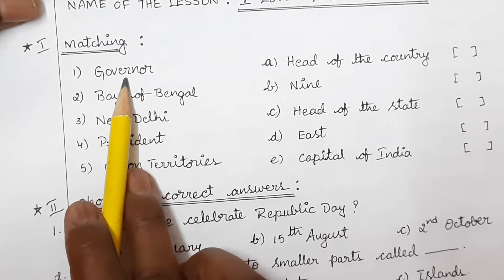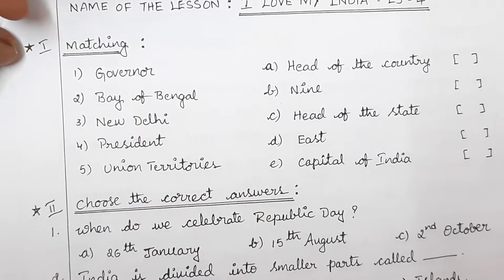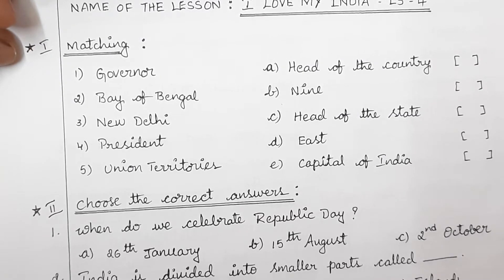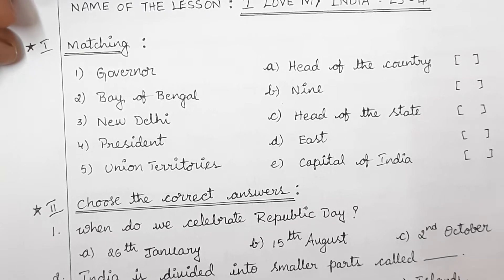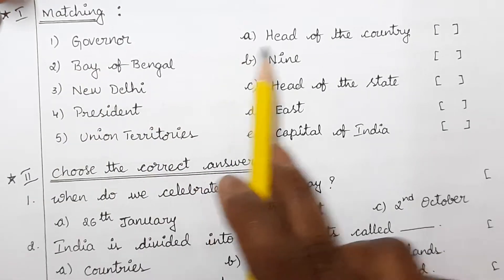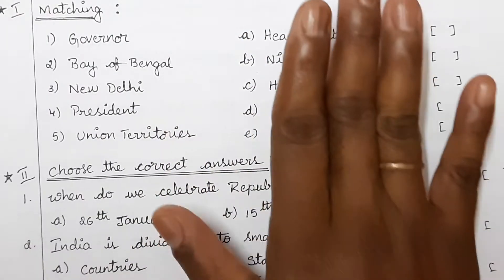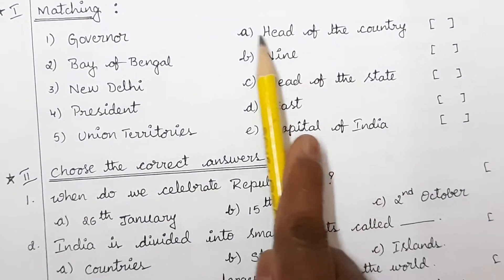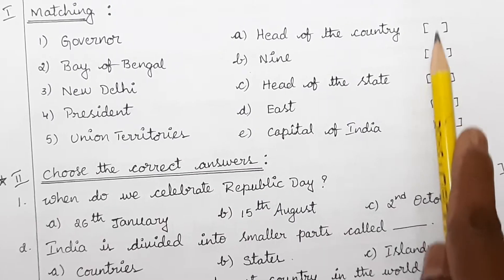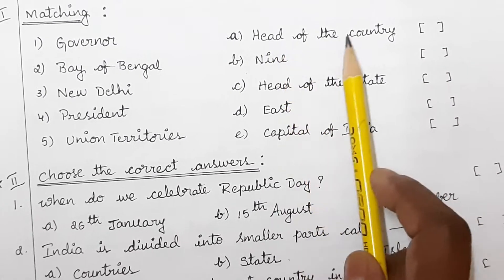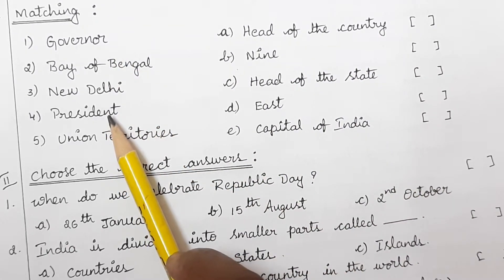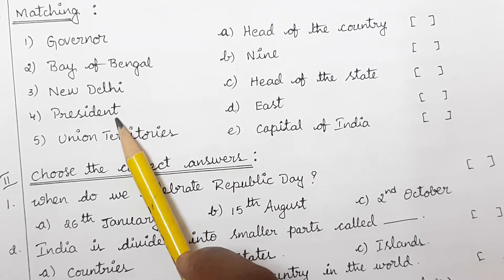You have to write the answers Roman-number wise. First, the matching section. Today or tomorrow I will send the model paper and blueprint. The matching is totally based on lesson number four. Always read the right side and match with the left side — only the number should come in the brackets. First one: head of the country — who is the head of the country? The answer is President, the first person of the country.